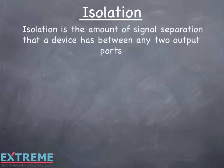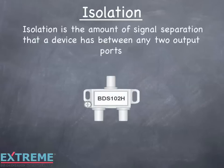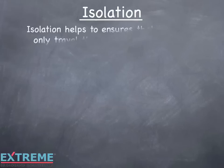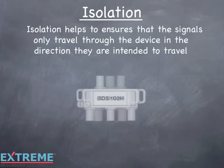Isolation is the amount of signal separation that a device has between any two output ports. Here we're showing a two-way splitter with signal feeding from the output ports to the input. Ideally, we'd like all the signals to travel in the direction they're intended to go — in this case from the output to the input. But some of the signal travels to the other port where it's not intended to go. Isolation attenuates the signals going to the ports it's not intended to go to, helping ensure signals only travel through the device in the direction they're intended to travel.